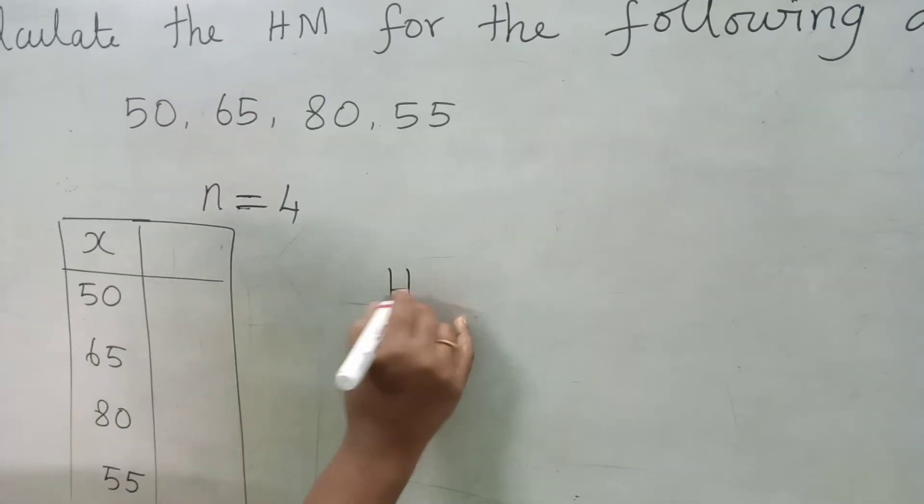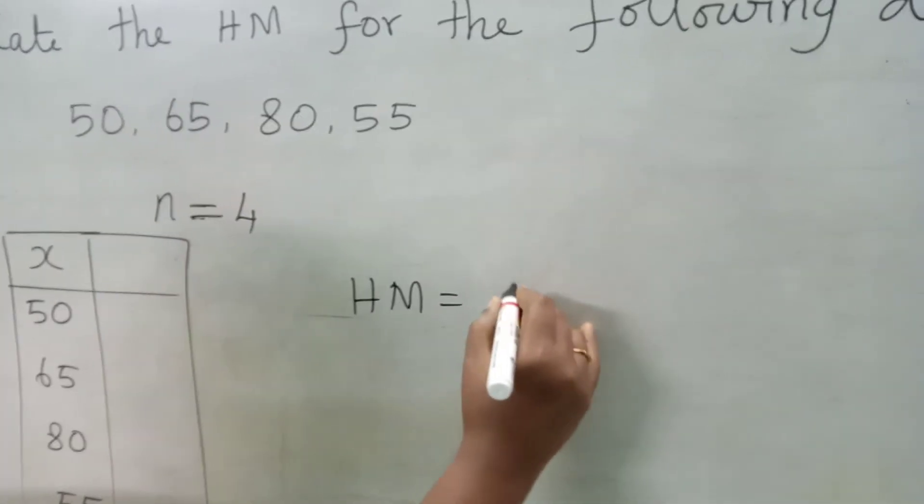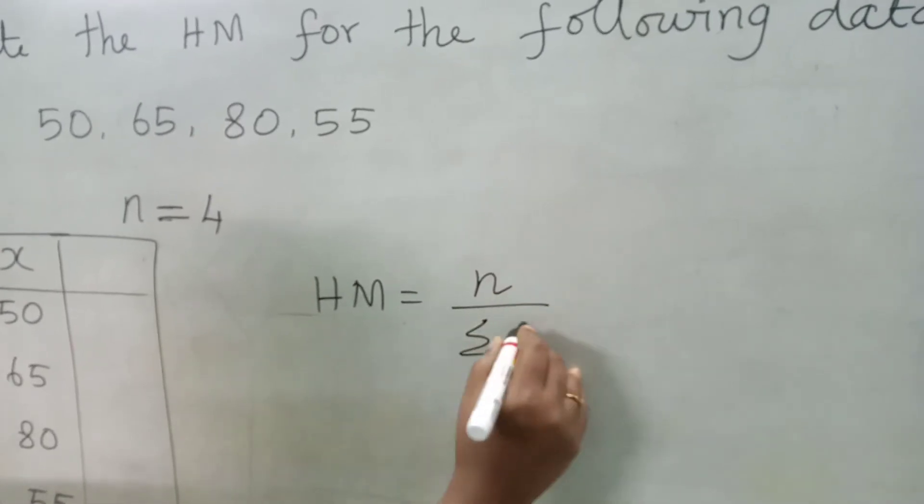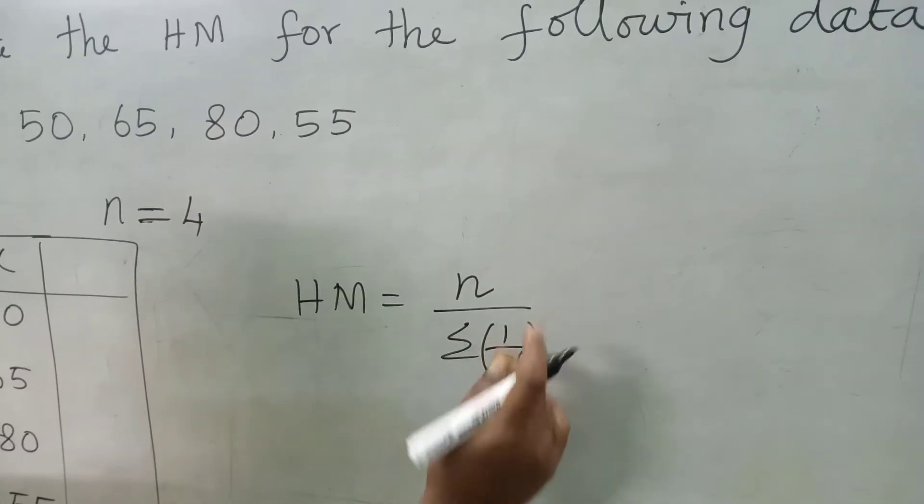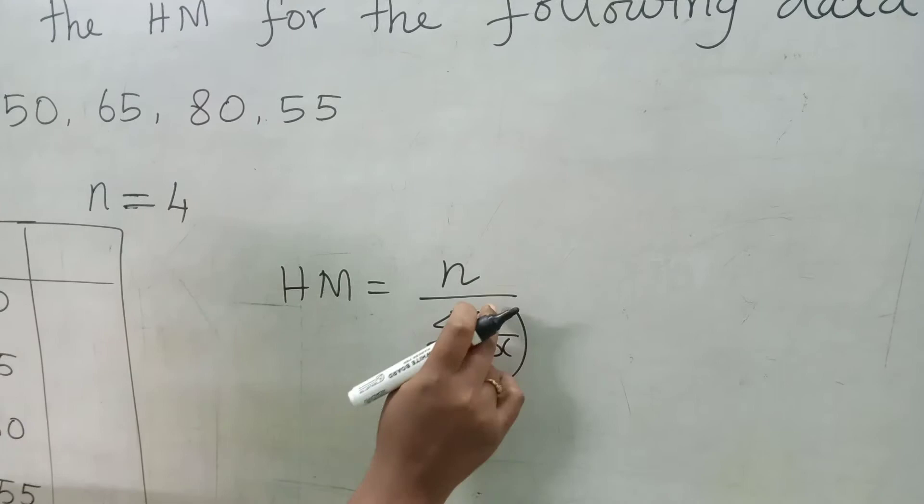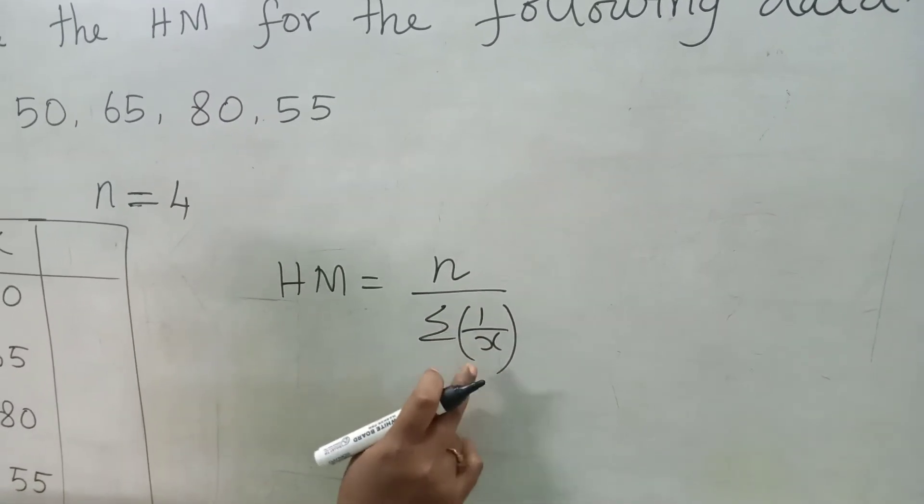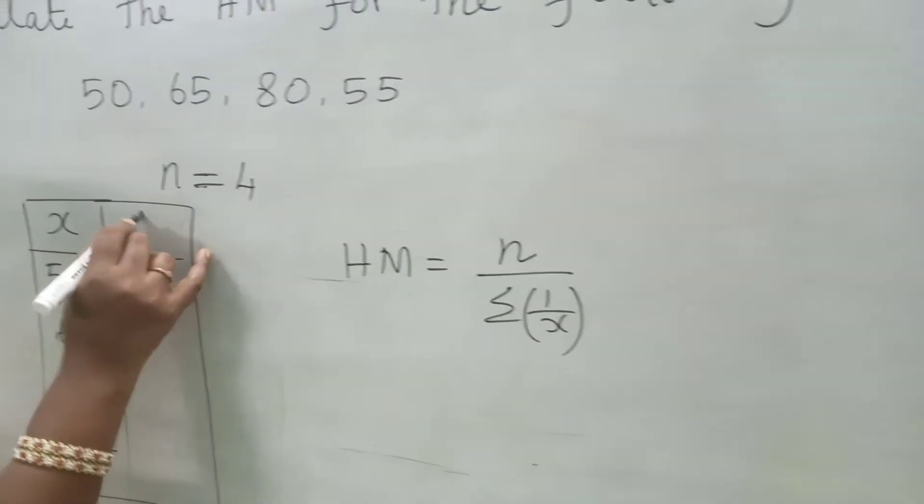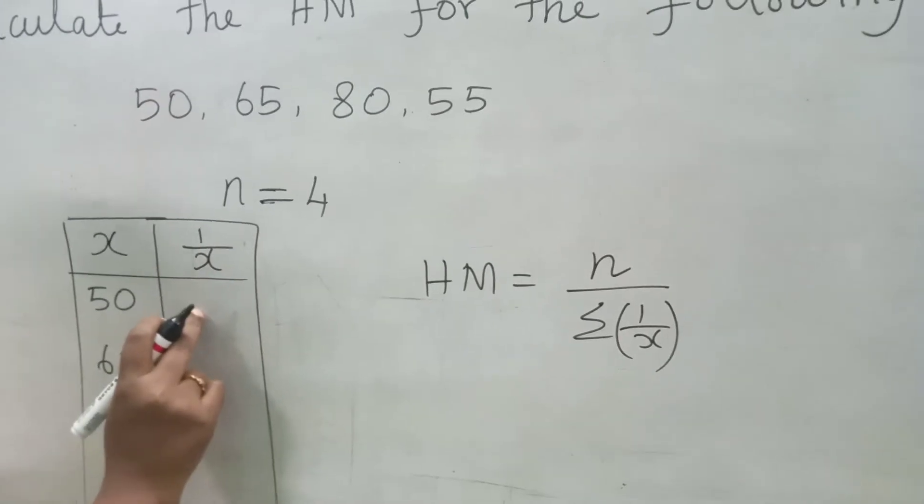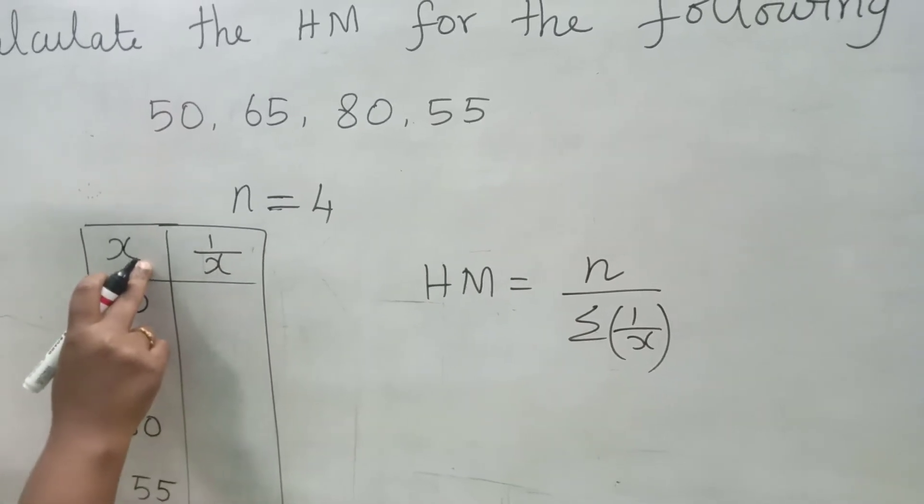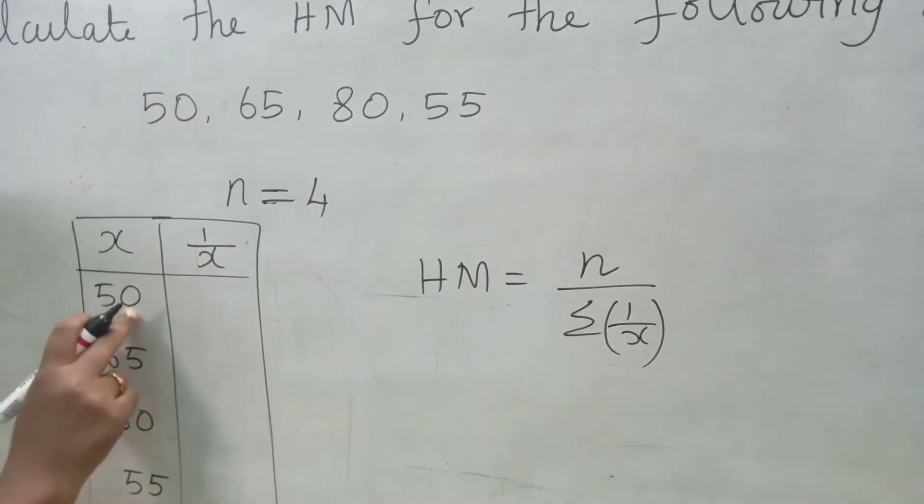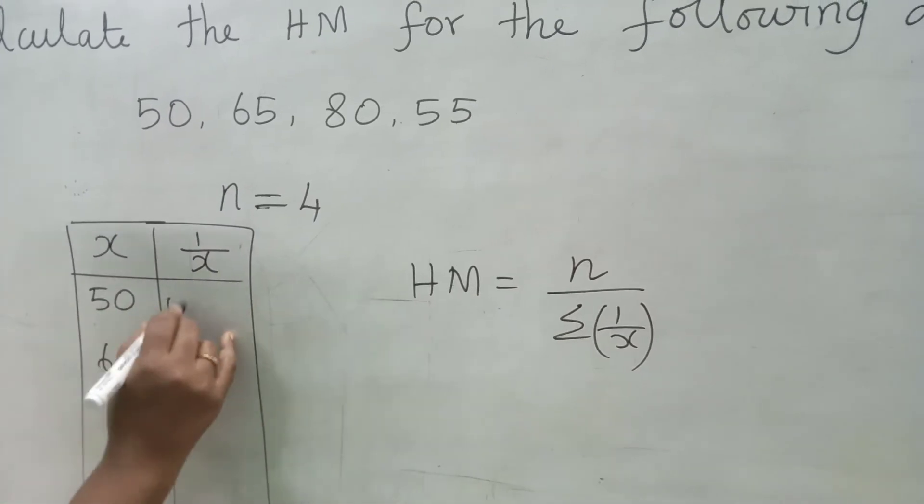Next we see the formula. Harmonic mean for raw data is equal to N divided by sigma 1 by X. We know the value of N is 4. Then we have to find sigma 1 by X. For that we find 1 by X. 1 by X is nothing but the reciprocal of X. In calculator you find 1 divided by 50. That is 0.02.